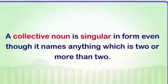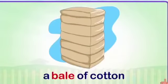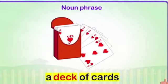A collective noun is singular in form even though it names anything which is two or more than two. For example, a set of tools, a bale of cotton, a deck of cards — or we can say a pack of cards. Such a group of words is called a noun phrase.